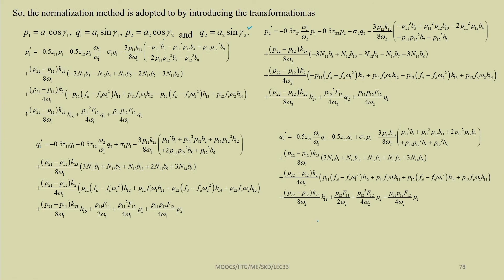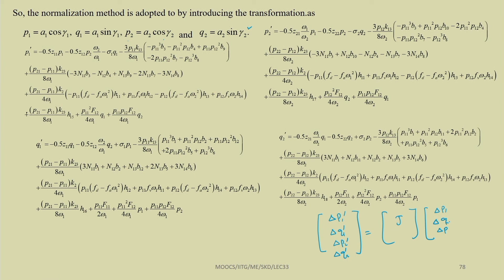By perturbing p₁, p₂, q₁, and q₂, we obtain perturbation equations Δp₁′, Δq₁′, Δp₂′, and Δq₂′. These are equal to the Jacobian matrix J times [Δp₁, Δp₂, Δq₁, Δq₂]^T. This form allows us to reduce the stability analysis to a Jacobian eigenvalue problem.